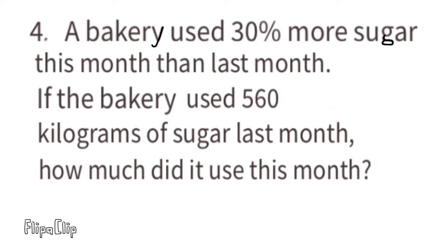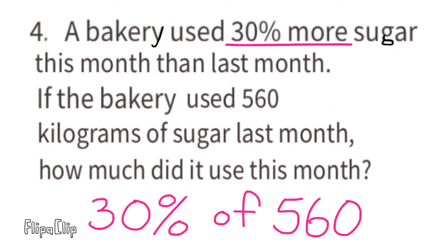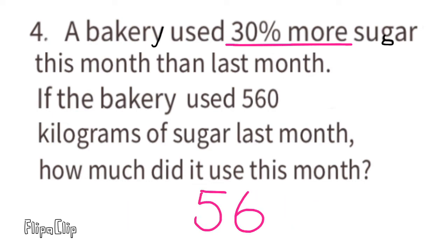Problem number four: a bakery used 30 percent more sugar this month than last month. If the bakery used 560 kilograms of sugar last month, how much did it use this month? We need to find 30 percent of 560. We can find 10 percent of 560, which is 56, then multiply by 3 to get 168.